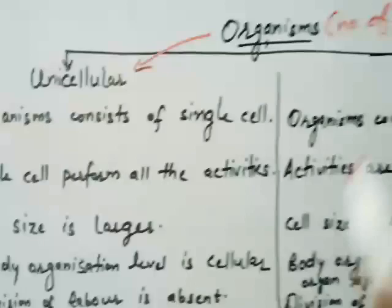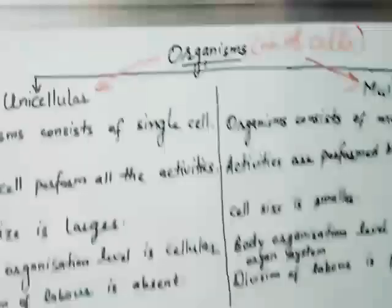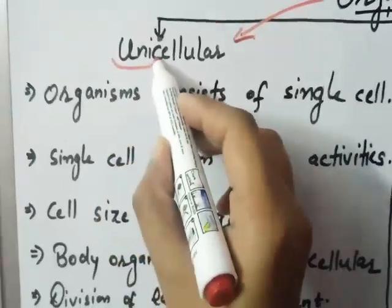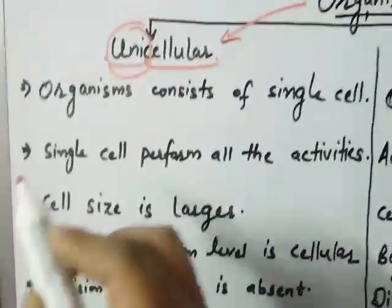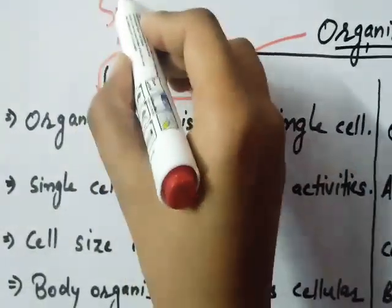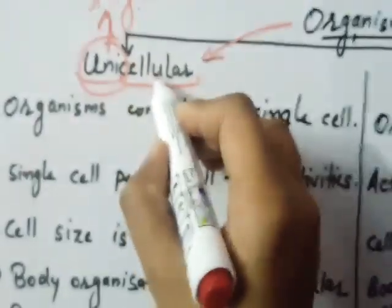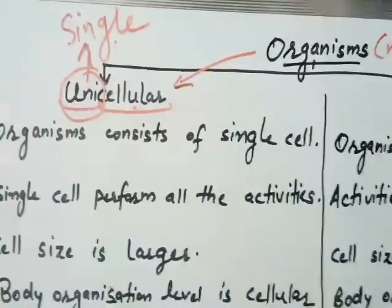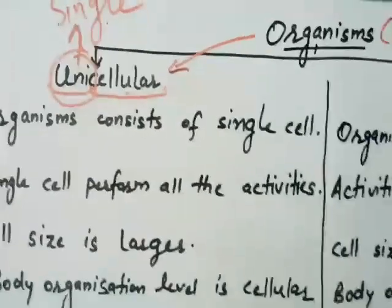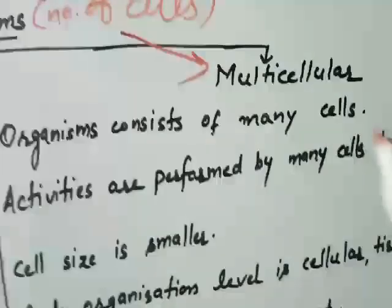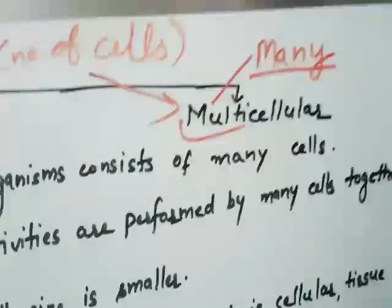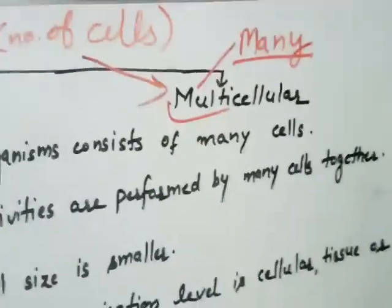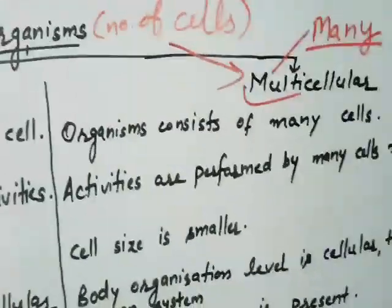On the basis of number of cells, organisms can be of two types: unicellular and multicellular. The word unicellular means uni plus cellular — uni means single, so unicellular means made up of a single cell. Multi means many, so multicellular organisms are those which are made up of multiple cells.